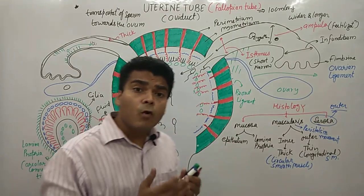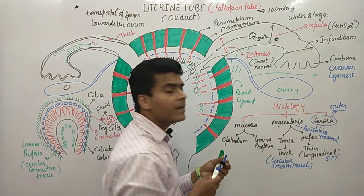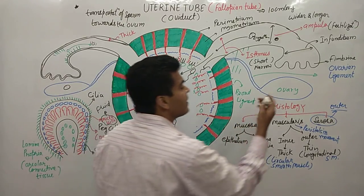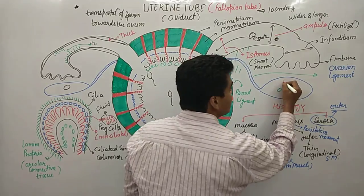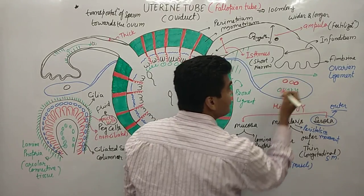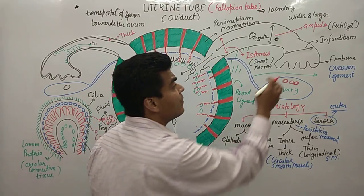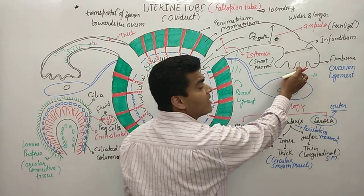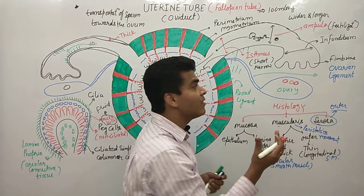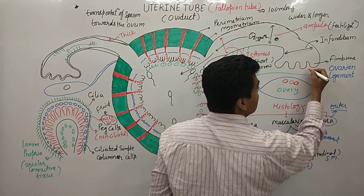When ovulation happens, the ovary releases an ovum. At this time, the fimbriae create a current, and there is formation of some current near the ovary after ovulation.